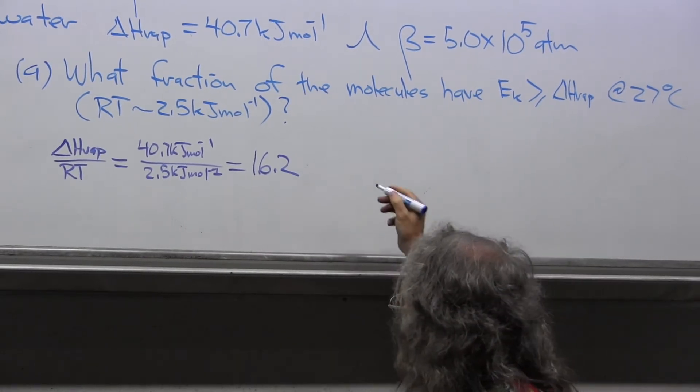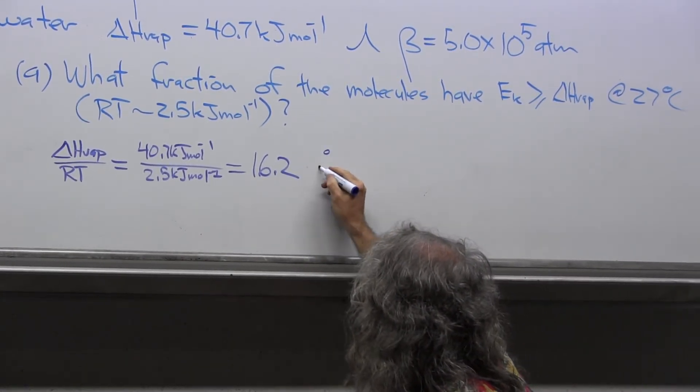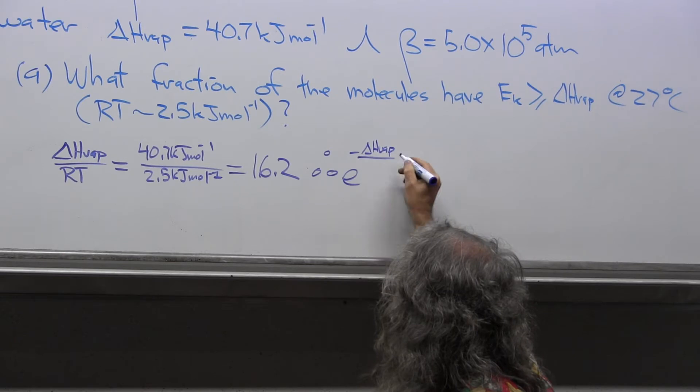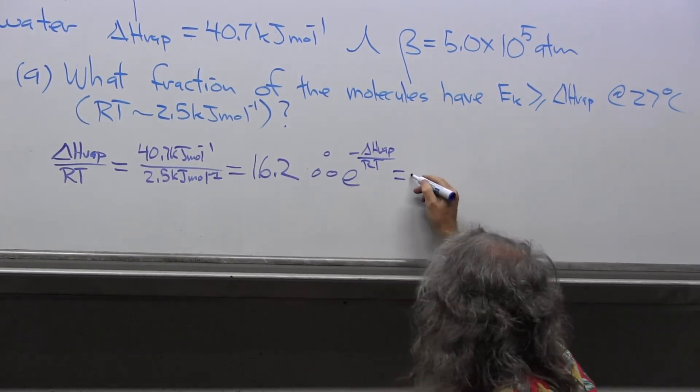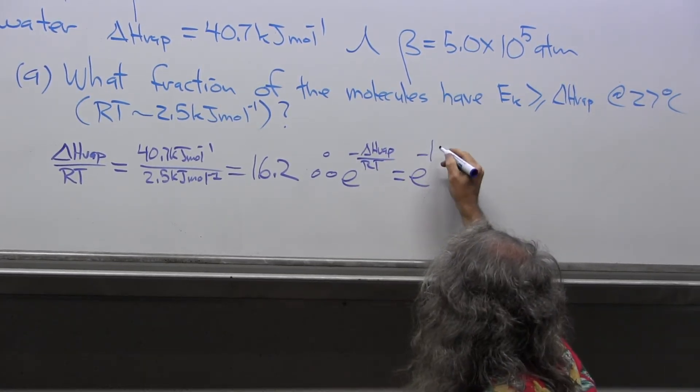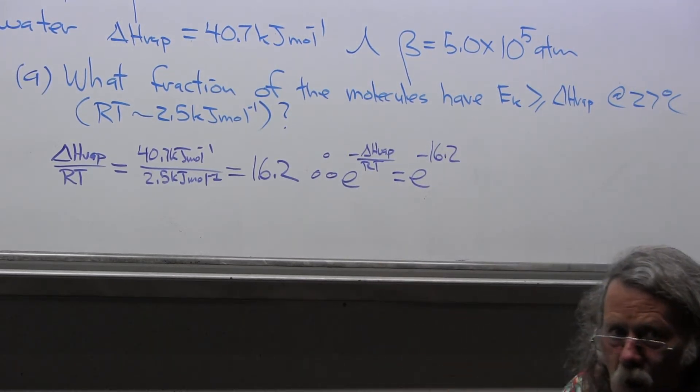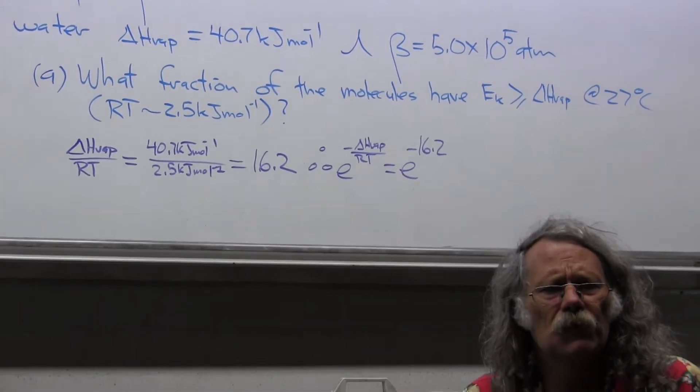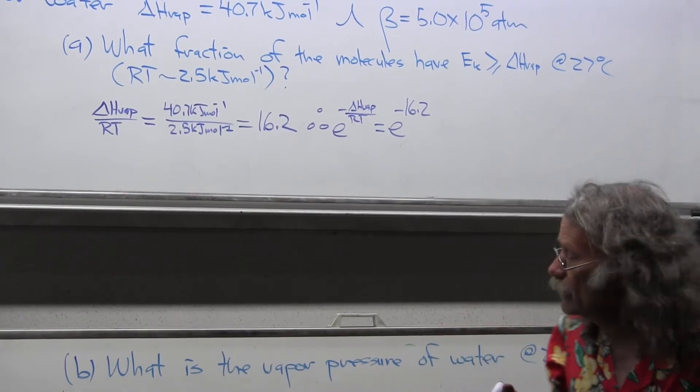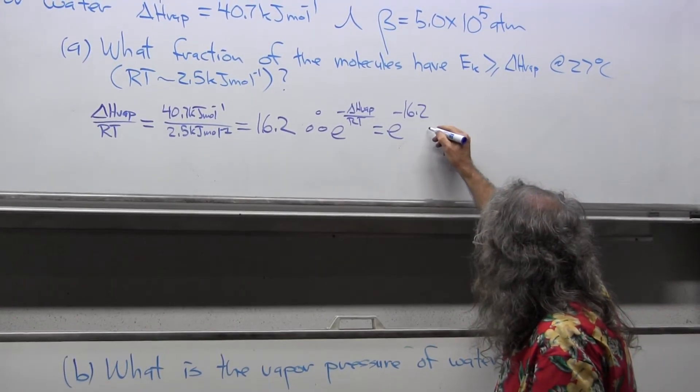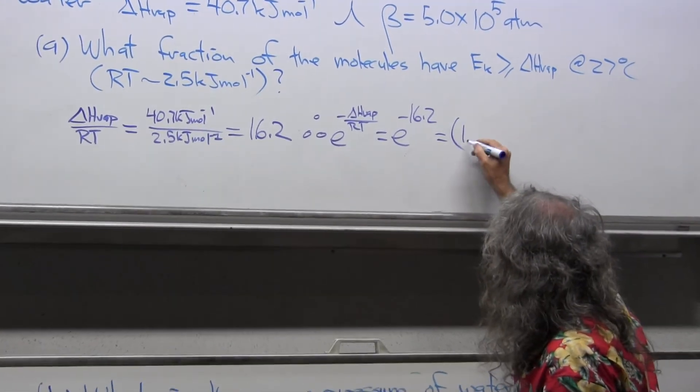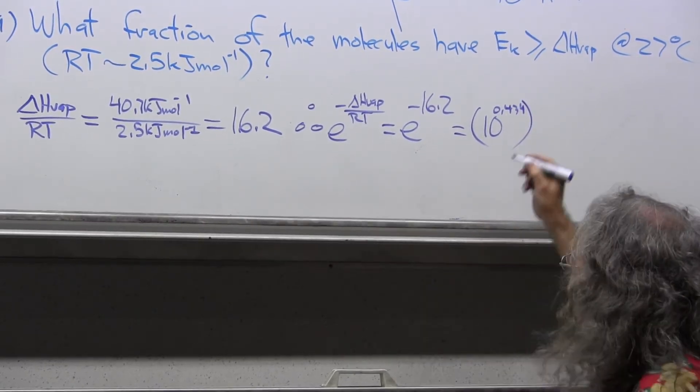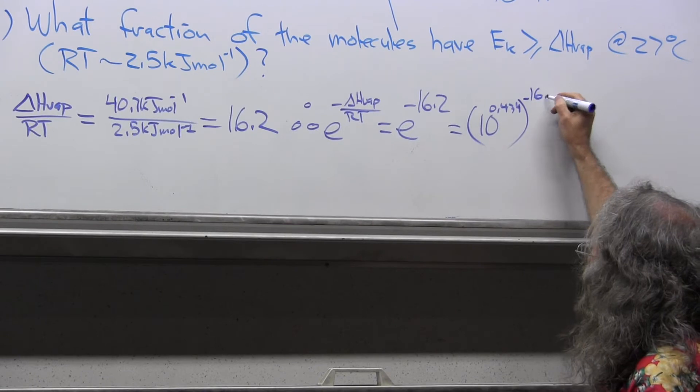You can easily verify that on scratch paper. Therefore, E to the minus delta H vaporization over RT equals E to the minus 16.2. Now we're going to have to draw upon the skills outlined in exercise 8 of the characteristic and mantissa term. We know that this is equal, because E equals 10 to the 0.434 power, to 10 to the 0.434 times minus 16.2.